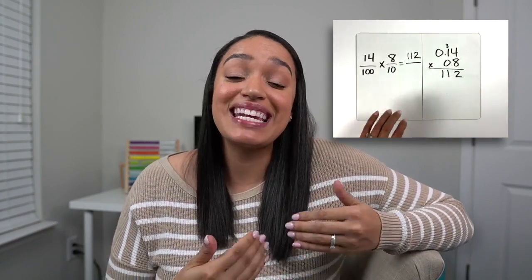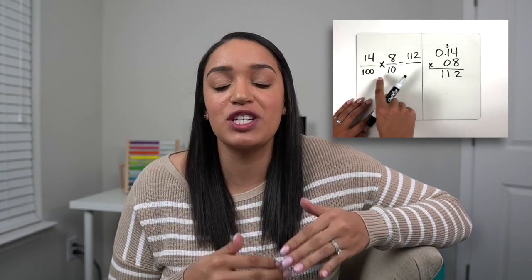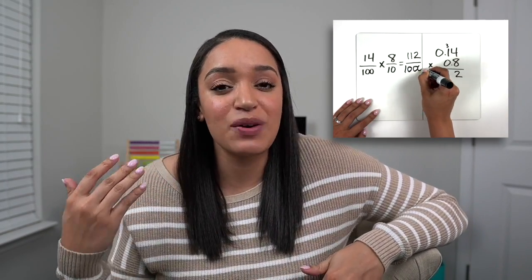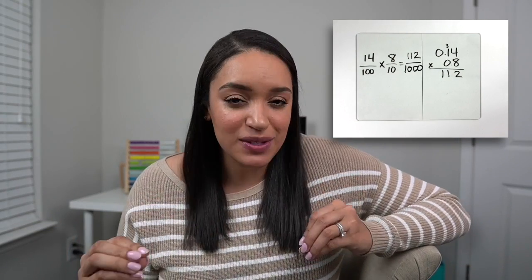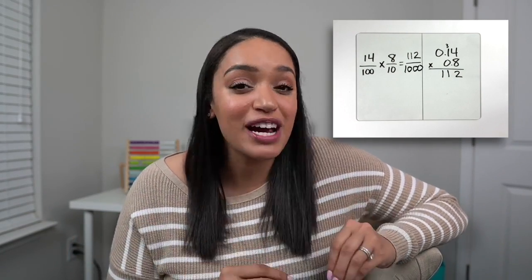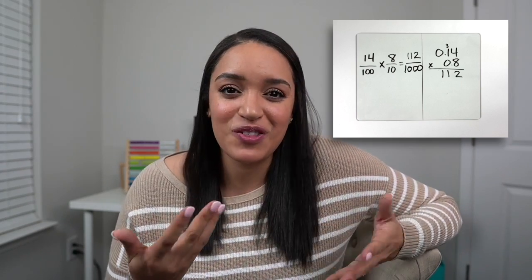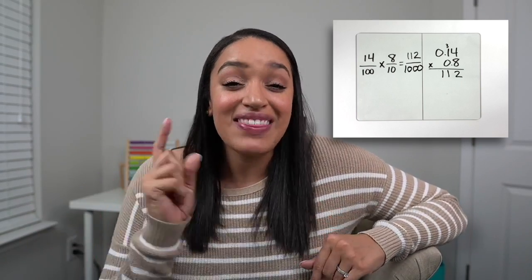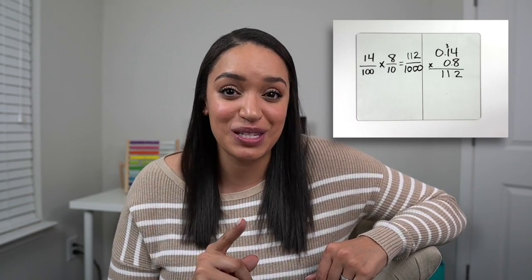Back to multiplying fractions — now we need to multiply the denominator by the denominator, which is 100 times 10, giving us 1000. So our answer is 112 thousandths. Remember that the fraction bar means division, so we really end up with an answer that is 112 divided by 1000. That is important to keep in mind because we're going to come back to that in just a bit.